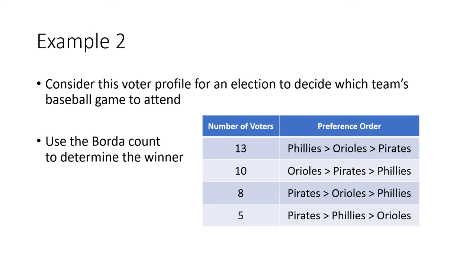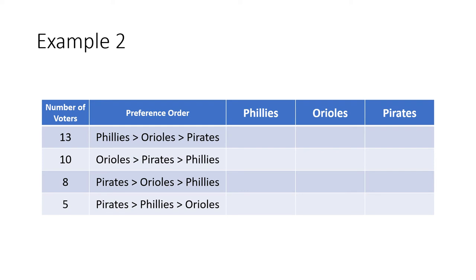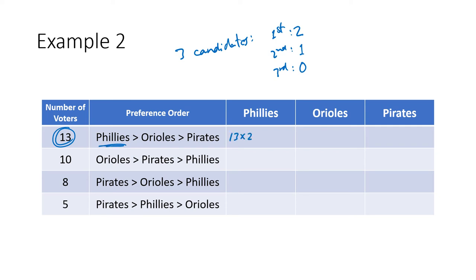Let's do another example. We have a voter profile to decide which team's baseball game to attend — Phillies, Orioles, or Pirates — and we're going to use Borda count to figure this out. With three candidates, first place is worth two points, second place is worth one, and third place is worth zero. We have 13 voters in the first row who like the Phillies the best, so that's 13 times two, giving 26 points. Orioles are ranked second, so that's 13 times one, which is 13. Pirates are ranked last, so that's 13 times zero, which is zero.